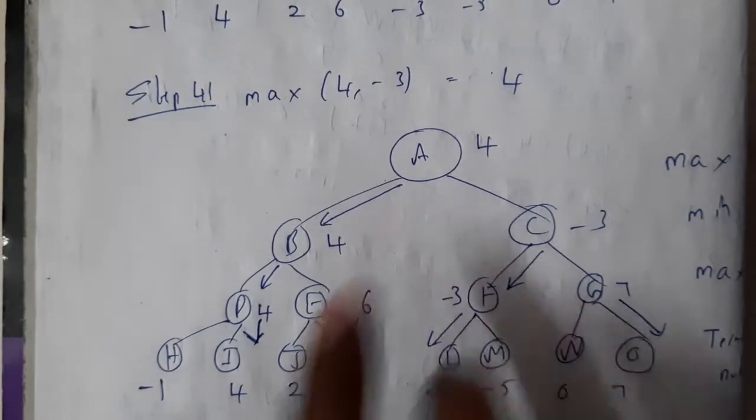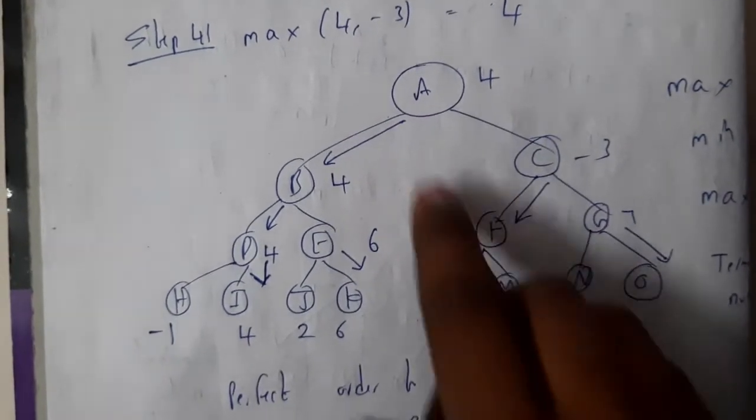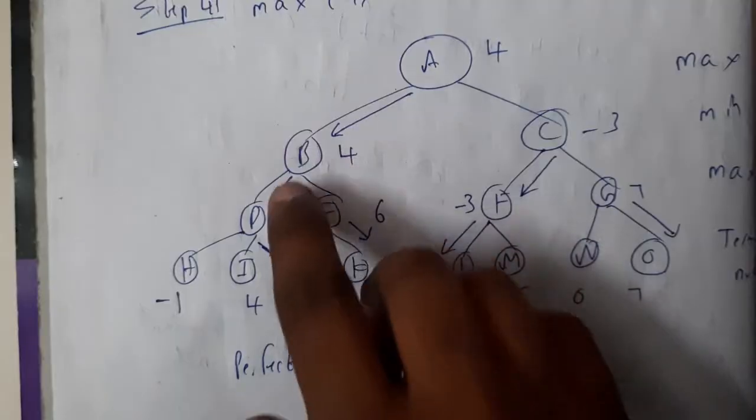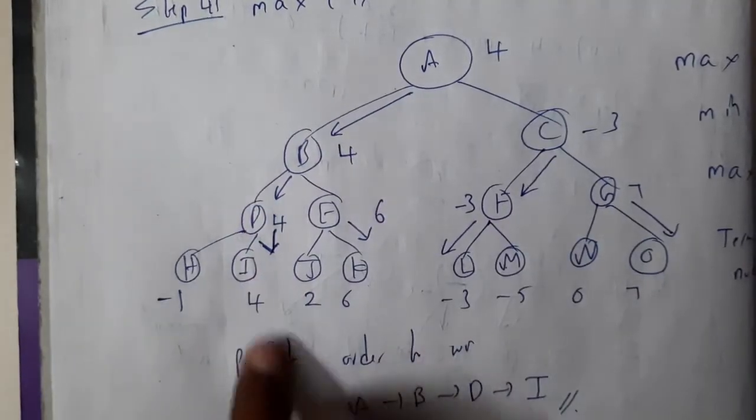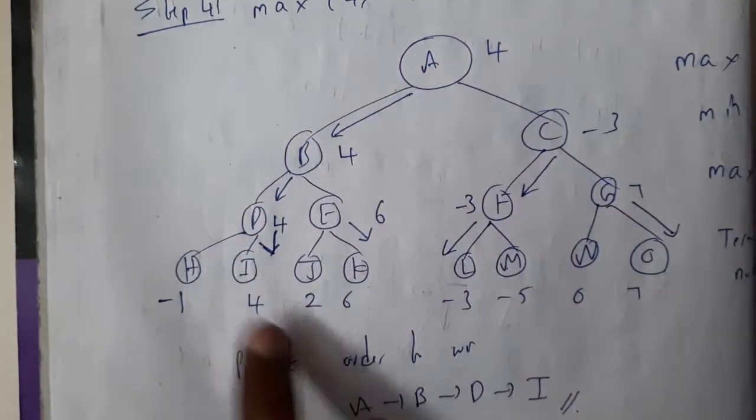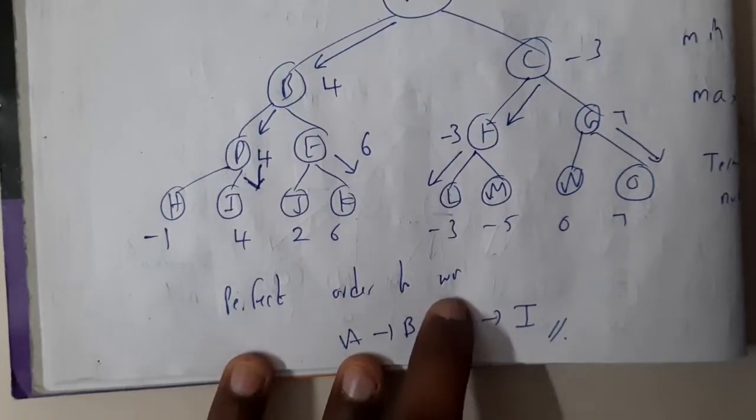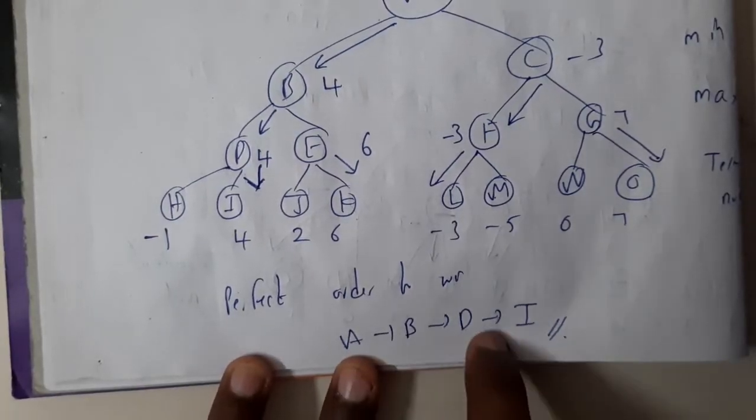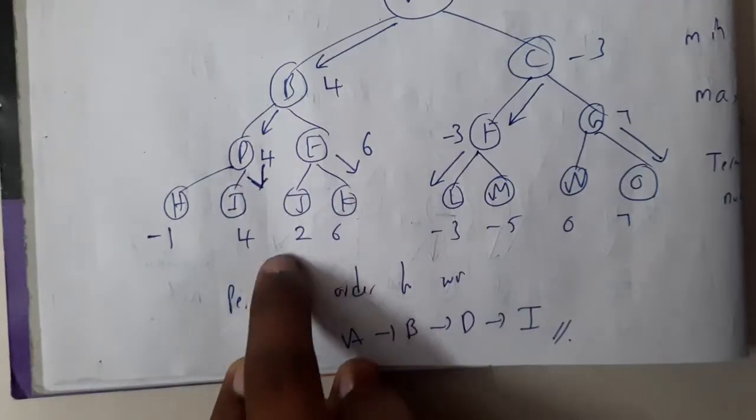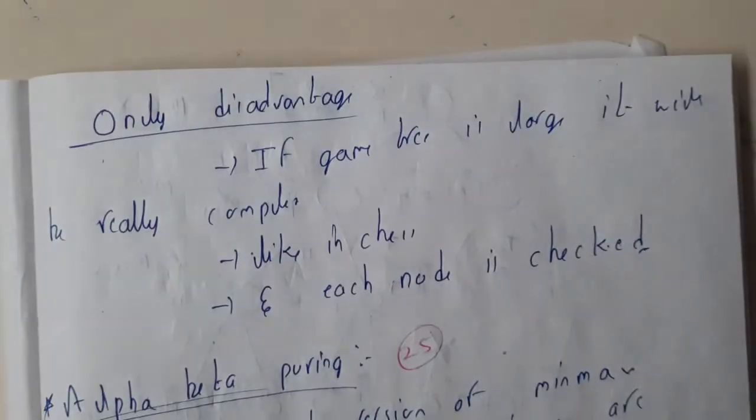The best path to follow to win the game is A to B, B to D, D to I. This is the best path to win the game - the perfect order to win the game. This path if you follow, you're gonna win the game.